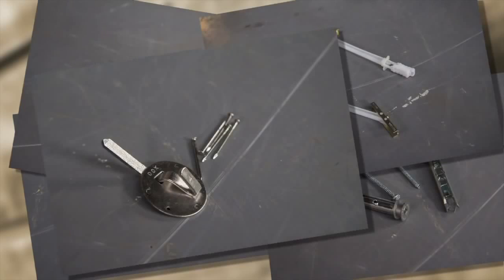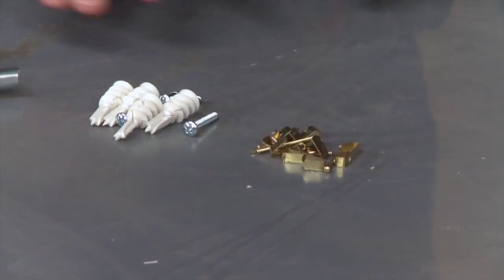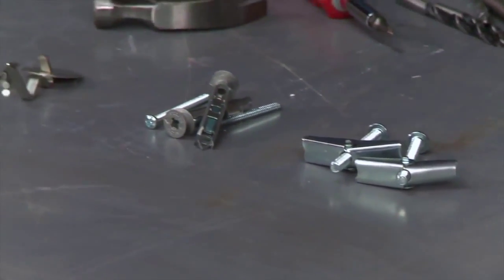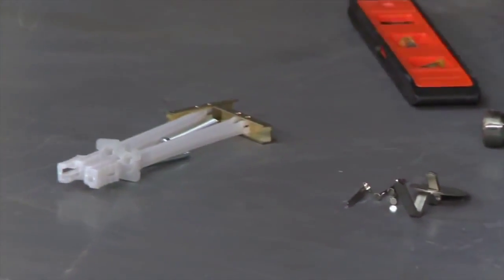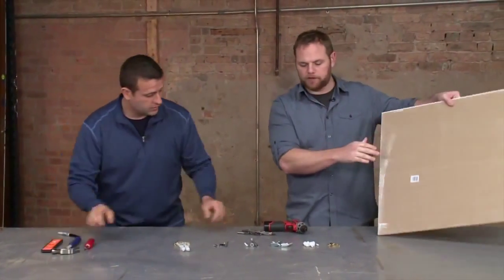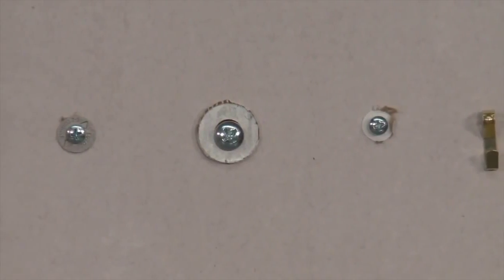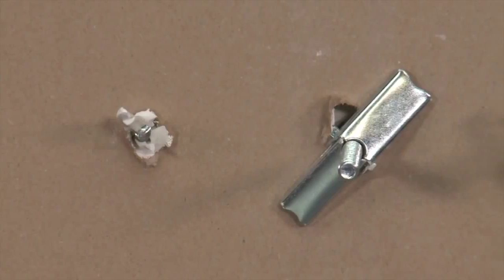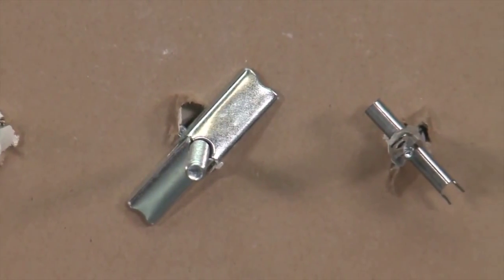Sean also brought in six different kinds of hanging hardware, ranging from a basic picture hook all the way up to a snap toggle that can hold hundreds of pounds. You actually brought in a piece of drywall as well, and you're going to show us what it looks like on the front and the back of the wall so you're familiar with the hardware.